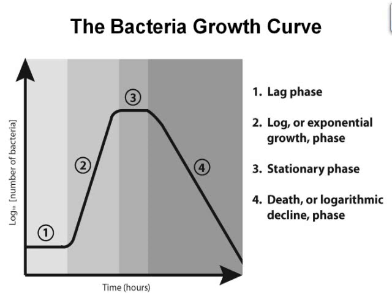The actual rate of this growth, i.e., the slope of the line in the figure, depends upon the growth conditions, which affect the frequency of cell division events and the probability of both daughter cells surviving. Exponential growth cannot continue indefinitely, however, because the medium is soon depleted of nutrients and enriched with waste. During stationary phase, the growth rate slows as a result of nutrient depletion and accumulation of toxic products. Some may use the term cryptic growth, which means even though bacterial growth may still be occurring, the slope of the line plateaus because the rate of growth is equal to the rate of bacterial death. Finally, during death phase, bacteria run out of nutrients and die, and the rate of death exceeds the rate of growth.